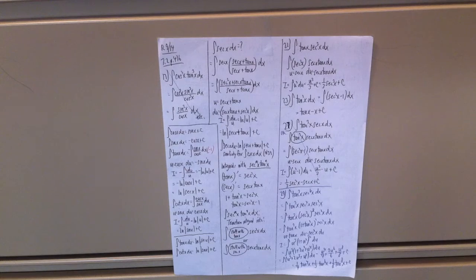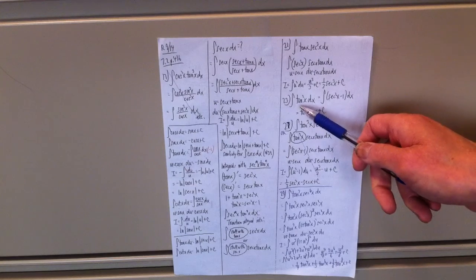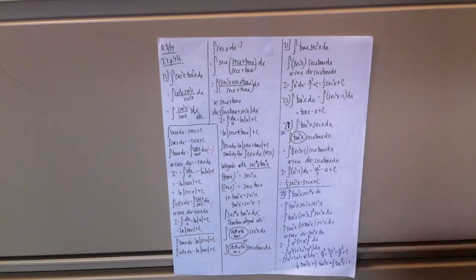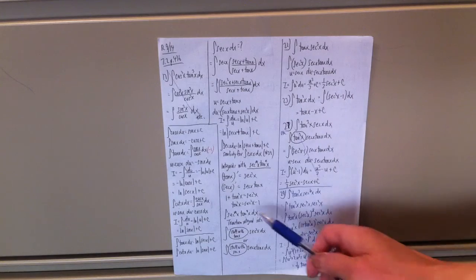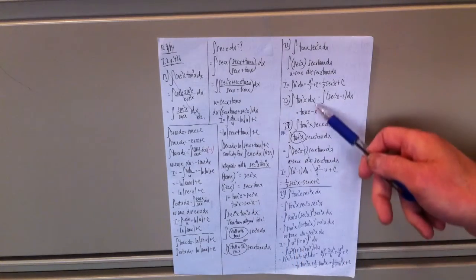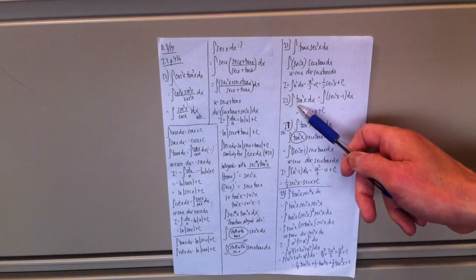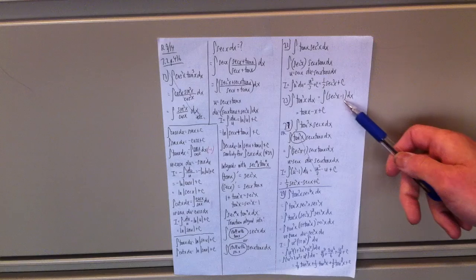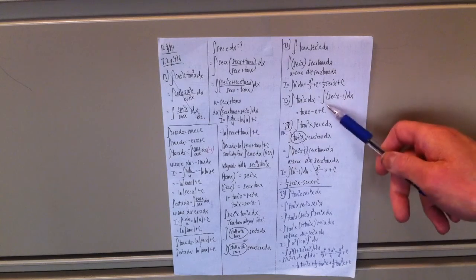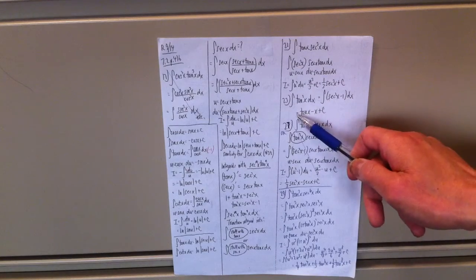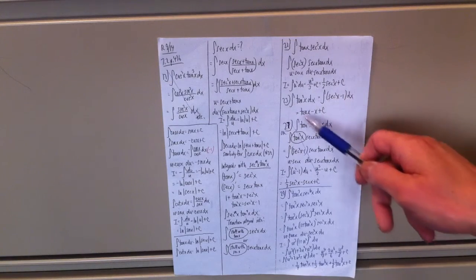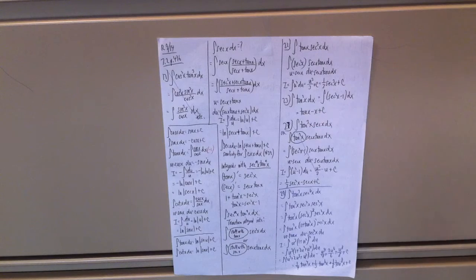Problem 23: integral of tan²(x) dx. The key is to rewrite tan²x as sec²x - 1. So the integral becomes sec²x - 1 dx. The integral of sec²x is tan(x), minus the integral of 1 is x, giving tan(x) - x + C.